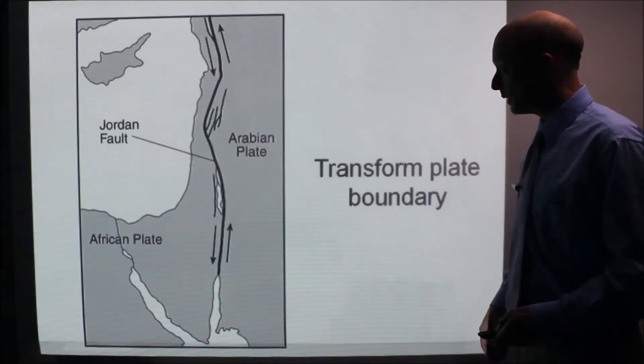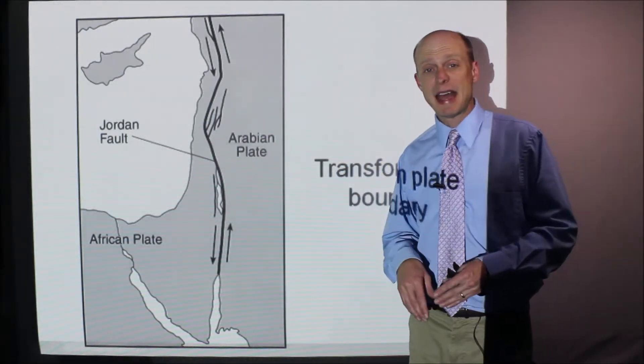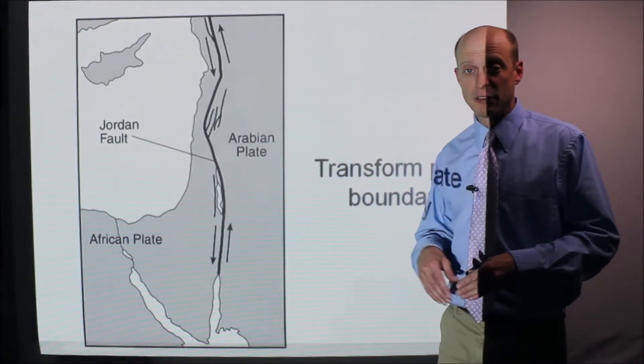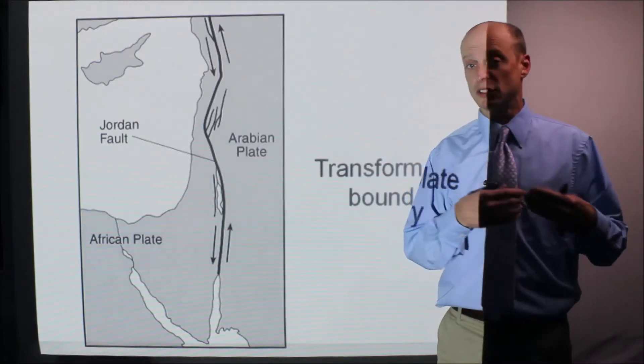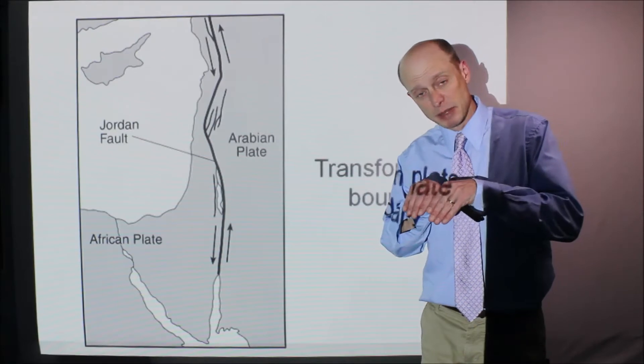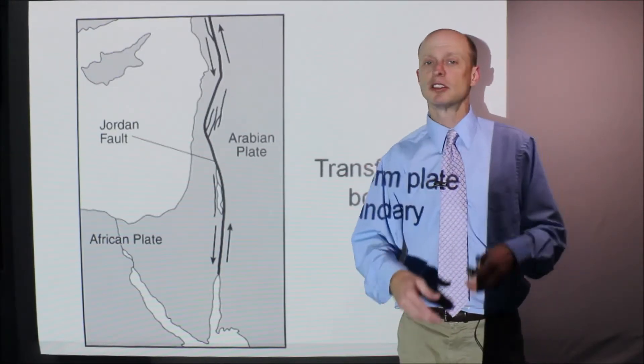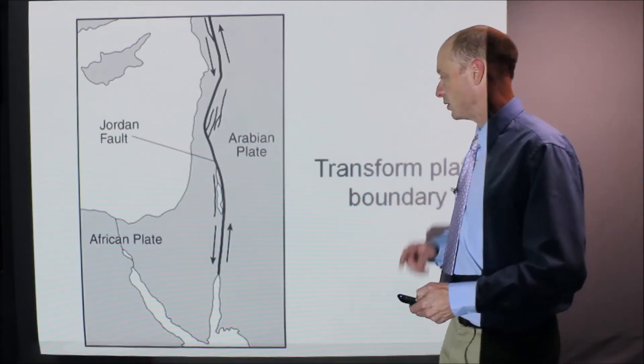Transform plate boundary. Transform plate boundaries when plates are sliding past each other like this. So if at a convergent plate boundary, you have subduction, we say crust is being destroyed. And at a divergent plate boundary, a mid-ocean ridge, the plates pull apart, lava comes up to fill the space. New crust is being formed there. We say crust is conserved here. It's neither created nor destroyed. Important to know.